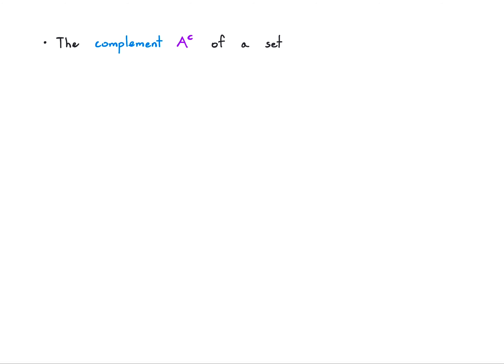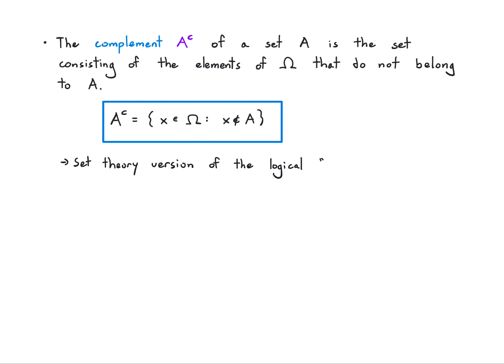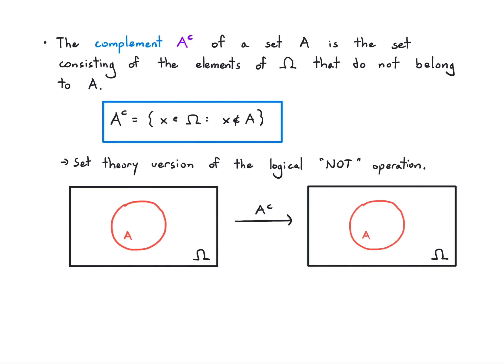We also define the complement. The complement A superscript C of a set A is the set consisting of the elements of the universal set that do not belong to A — anything that's not in A is in its complement. So A complement = {x : x is not in A}. This is a set theory version of the logical NOT operation. To draw this with a Venn diagram, I need to pay attention to what the universal set is, because it's the elements in the universal set that are not in A. Without seeing the universal set, I wouldn't have a sense for how big that set is.